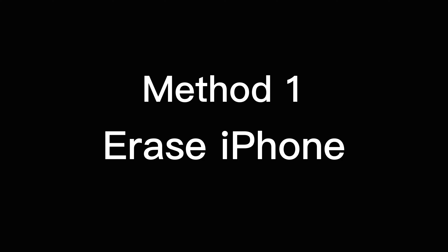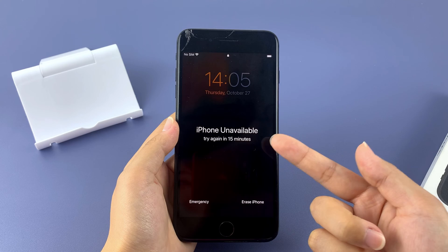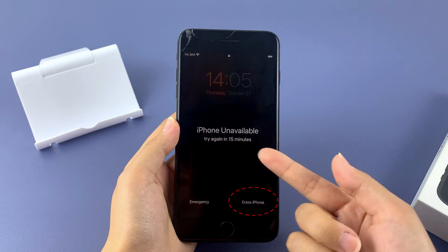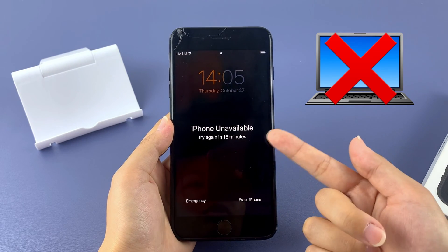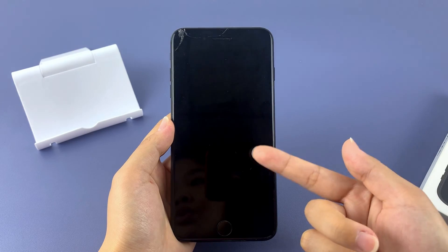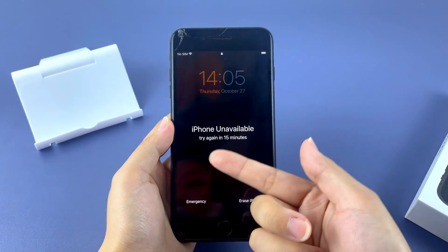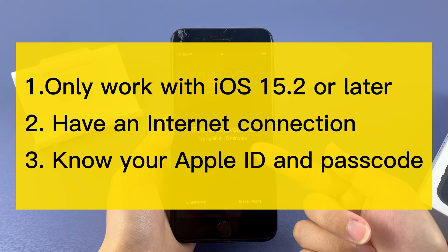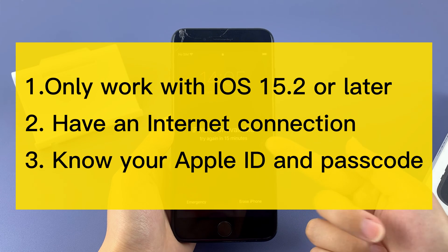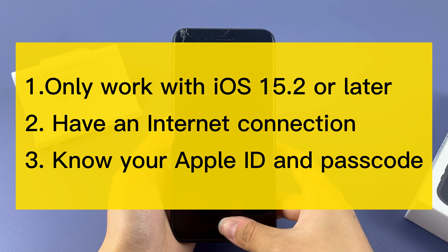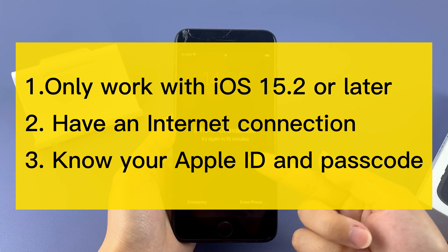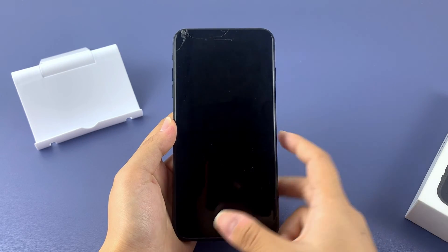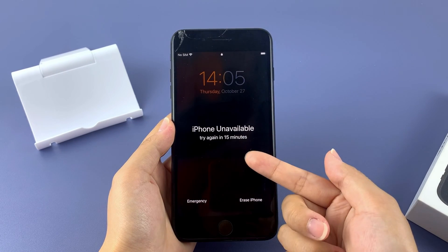The first way to unlock your iPhone SE is to use the Erase iPhone option. It is the most convenient way to solve the problem of unlocking iPhone SE because it doesn't require a computer — just a few taps on your iPhone SE will unlock your iPhone wirelessly. But there are some conditions you need to meet: your iPhone SE should be running iOS 15.2 or later, connected to an internet connection, and you need to clearly remember your Apple ID and passcode. If your iPhone SE meets these conditions, then you can use the Erase iPhone option to unlock your device.